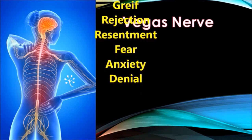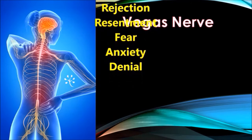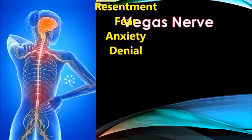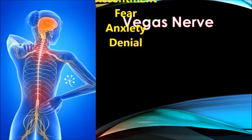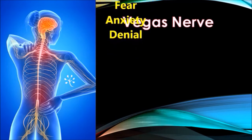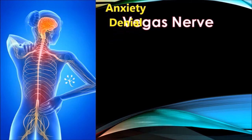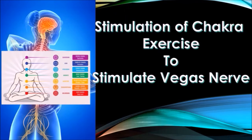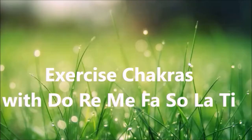If we can unclog these energy centers, we can stimulate the vagus nerve, which affects our brain and is connected to the ADHD I spoke about at the beginning. I have particular simple exercises to unblock these seven energy centers. We are going to activate the seven chakras by reciting the solfège syllables: do, re, mi, fa, sol, la, ti.